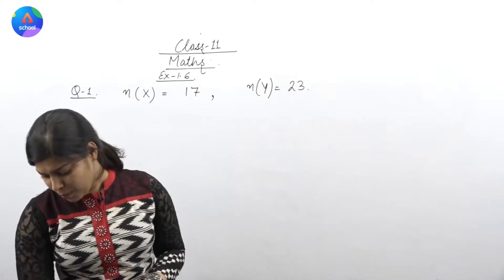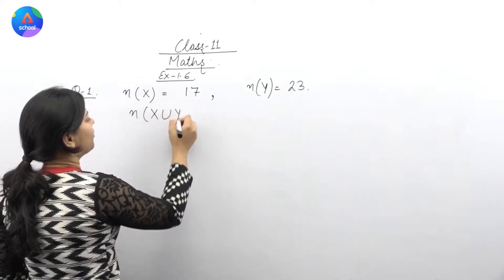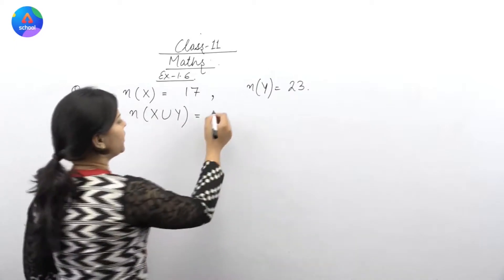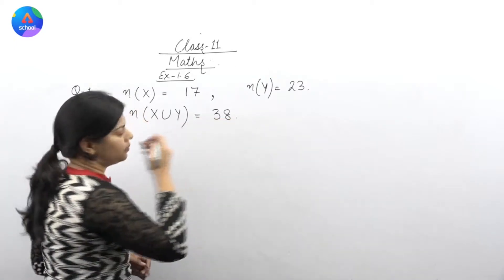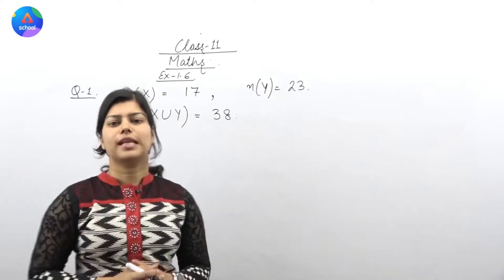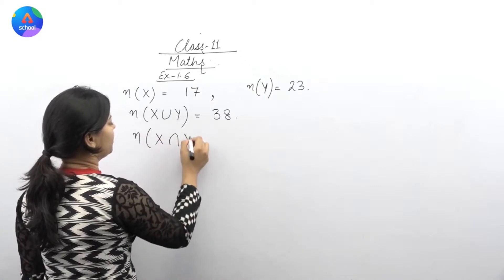Number of elements in X union Y, this is equal to 38. What we have to find out? Find number of elements in X intersection Y. So, we have to find out this.